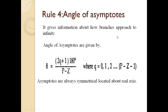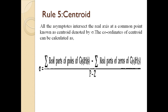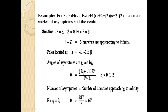The fifth rule is centroid. All the asymptotes intersect the real axis at a common point called the centroid, denoted by sigma. The centroid is calculated as: sigma = (summation of real parts of open loop poles − summation of real parts of open loop zeros) / (p − z), where p and z are open loop poles and zeros.